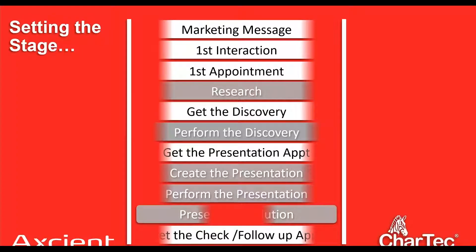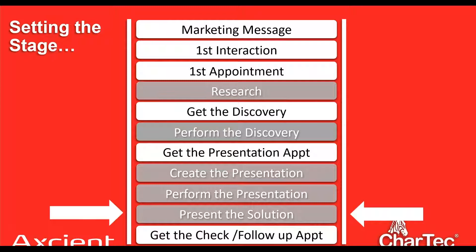So first I want to set the stage and understand where we are in the process. Here's our sales process. On a high level, I want to take it to the point where we've had our marketing win, someone showed interest, we had our first interaction, converted that to a knee-to-knee appointment to further qualify the opportunity, maintain curiosity, and closed on the discovery. During that discovery we're getting the meat and potatoes for the presentation.